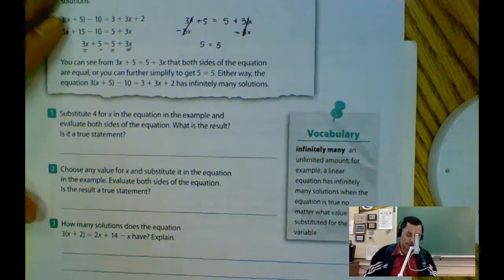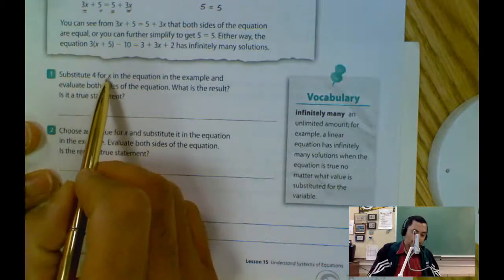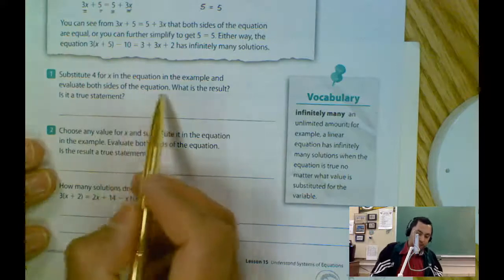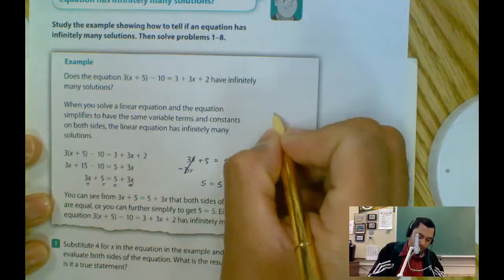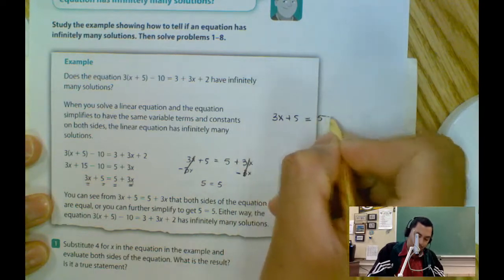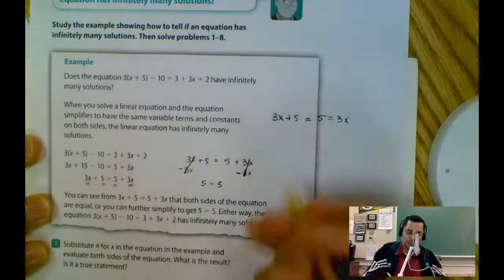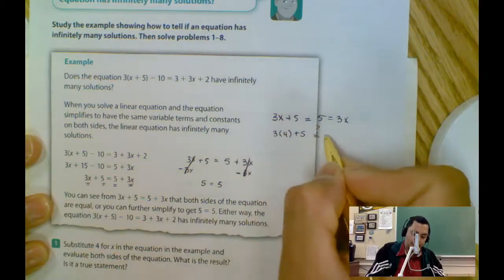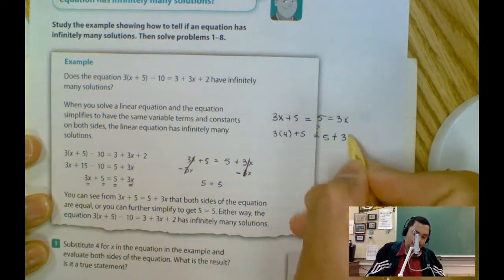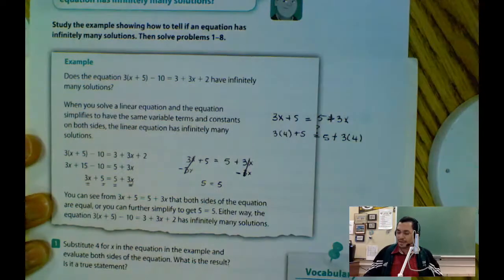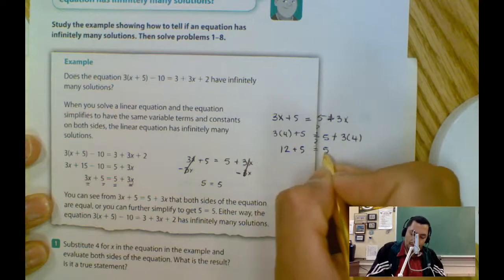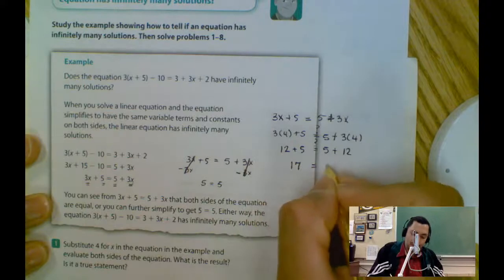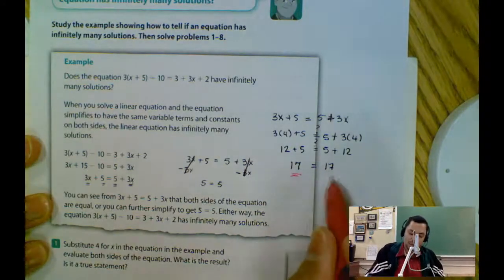Now let's answer questions 1 through 8. They said substitute 4 for x in the equation in the example and evaluate both sides of the equations — what is the result? So we have 3x plus 5 equals 5 plus 3x. We substitute: 3 times 4 plus 5 equals 5 plus 3 times 4. That gives 12 plus 5 equals 5 plus 12, which is 17 equals 17. I get exactly the same solution on the left and on the right.